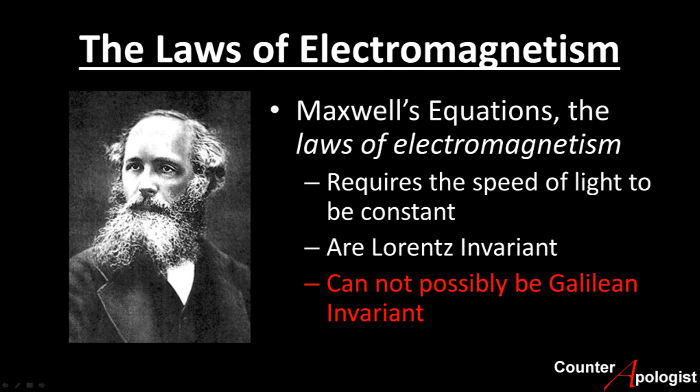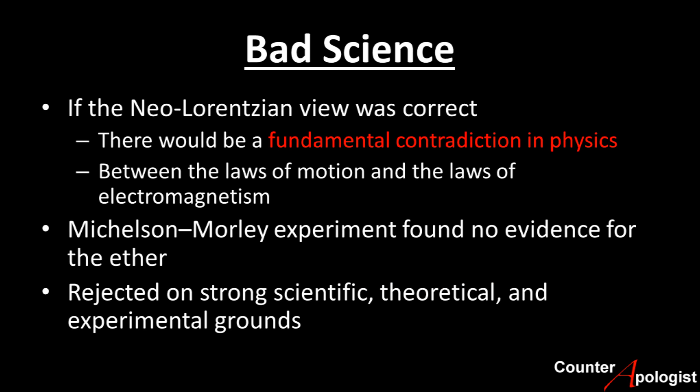Second, Maxwell's equations showed that the laws of electromagnetism can only be Lorentz invariant. In fact, applying the Galilean invariance required by the Neo-Lorentzian view to electromagnetism breaks the equations entirely. This means that if the Neo-Lorentzian view were correct, there would be a fundamental contradiction in physics between the laws of motion and the laws of electromagnetism. This, combined with experimental evidence and the Michelson-Morley experiment — which failed to detect any presence of the luminiferous ether — is the main reason modern physics rejects the Neo-Lorentzian interpretation in favor of the Minkowski four-dimensional space-time interpretation.